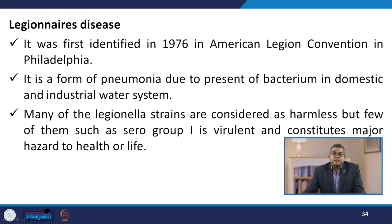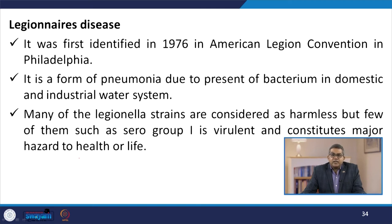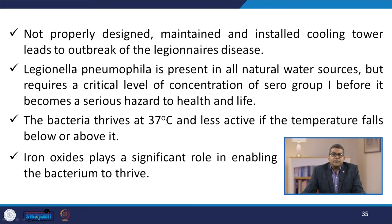Let us talk about Legionnaires' disease. It was first identified in 1976 at the American Legion convention in Philadelphia. It is a form of pneumonia due to the presence of bacterium in domestic and industrial water systems. Many of these strains are considered harmless, but a few, such as certain serogroups, are virulent and constitute a major hazard to health and life. Improperly designed, maintained, and installed cooling towers lead to outbreaks of this disease. It is present in all natural water sources but requires a critical level of concentration of the serogroup before it becomes a serious hazard.